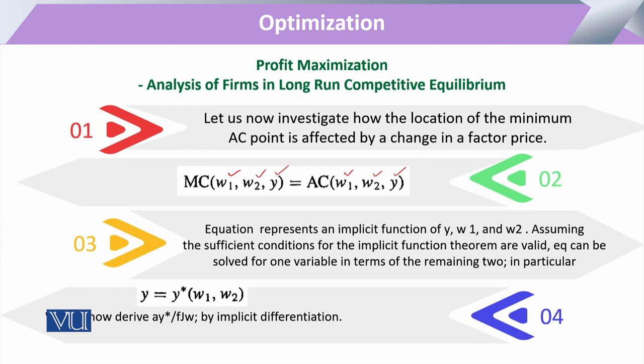If we look at these two equations, there is an implicit function internally involved because both depend on the amount of output. If we apply the implicit function theorem to the conditions that prevail here, we can solve this equation in any one variable, keeping the others constant. When we solve for the second variable, we move to partial equilibrium analysis.